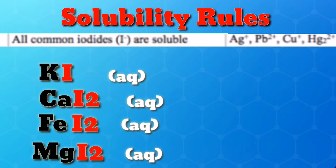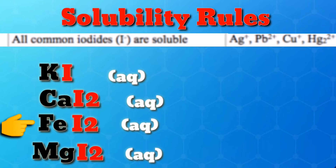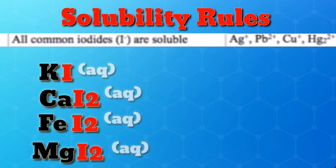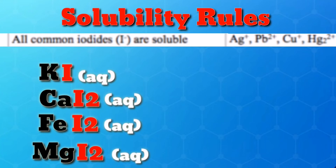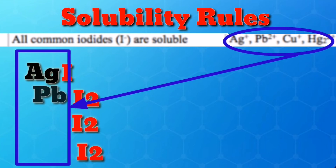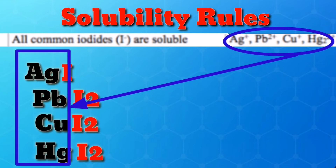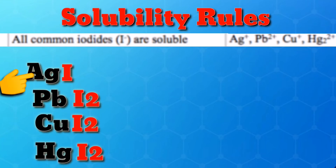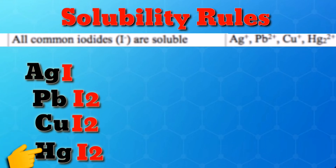Rule 7: All common iodides are soluble. Examples of soluble iodides include potassium iodide, calcium iodide, iron iodide, and magnesium iodide. Exceptions include iodide compounds with silver, lead, copper, and mercury — silver iodide, lead iodide, copper iodide, and mercury iodide are insoluble.